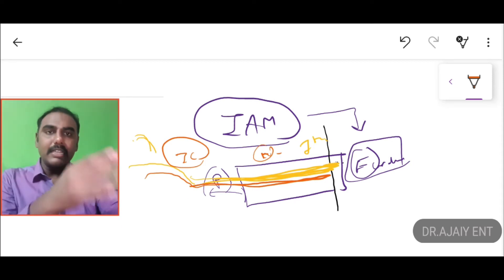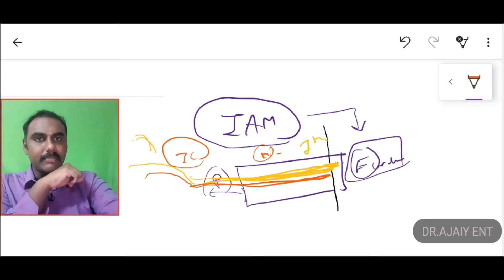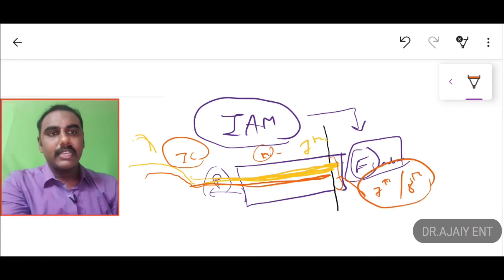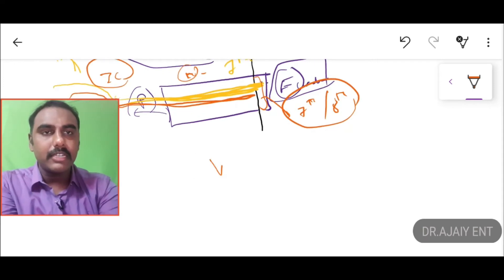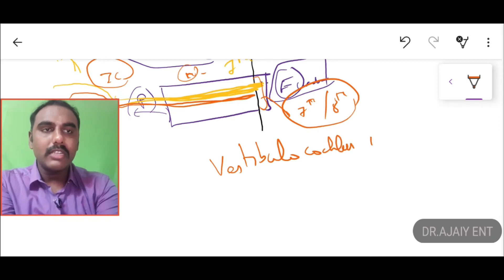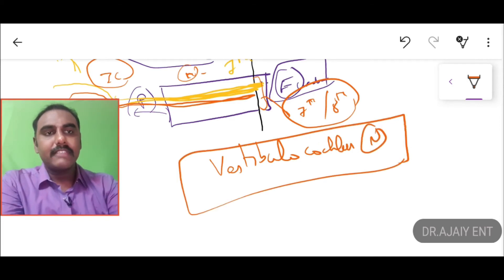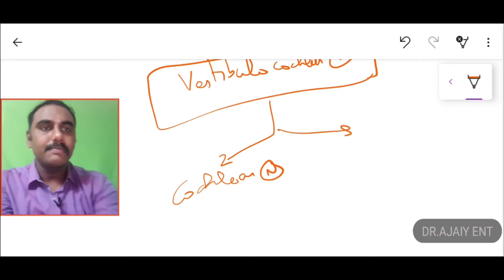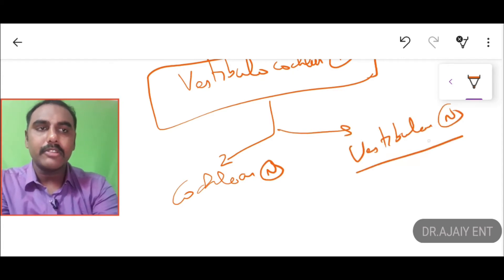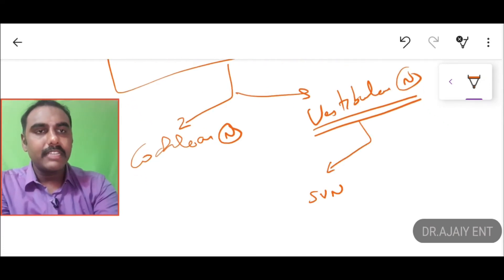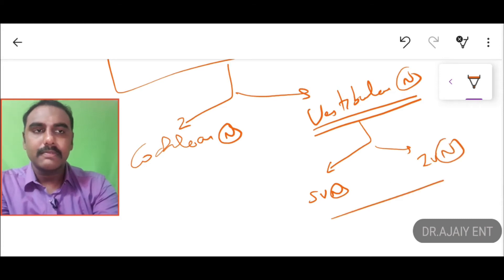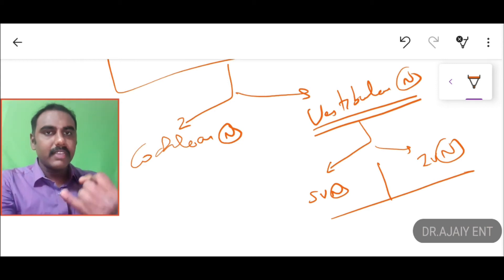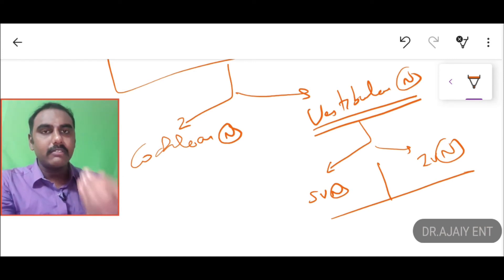What are the contents of the internal acoustic meatus — the nerves which are components? We have the 7th nerve (facial nerve) and the 8th nerve. The 8th nerve is otherwise called the vestibulocochlear nerve, which is further divided into the cochlear nerve and the vestibular nerve. The vestibular nerve is further divided into the superior vestibular nerve and the inferior vestibular nerve.